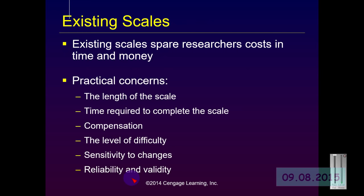When conducting your own research project, it can save a lot of time, effort, and sometimes money if you simply use someone else's scale. Why go to the effort of devising a depression scale when you can use Beck's Depression Inventory — a scale that has been used for many years and has been validated with many, if not all, populations?